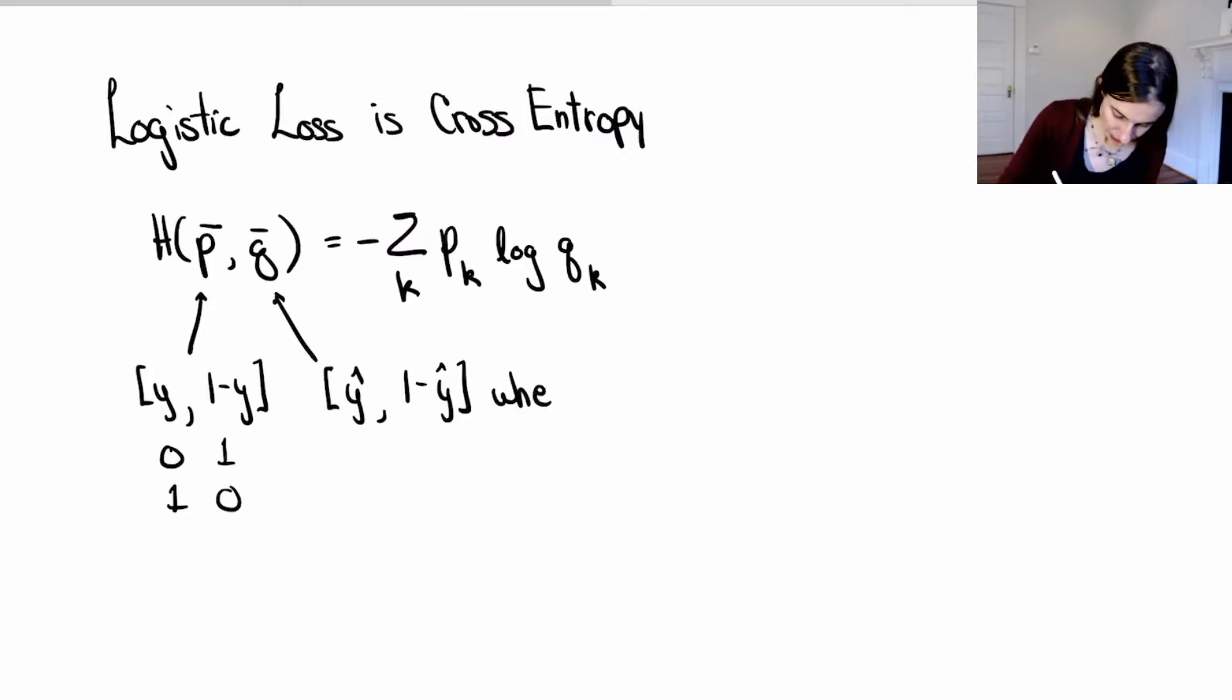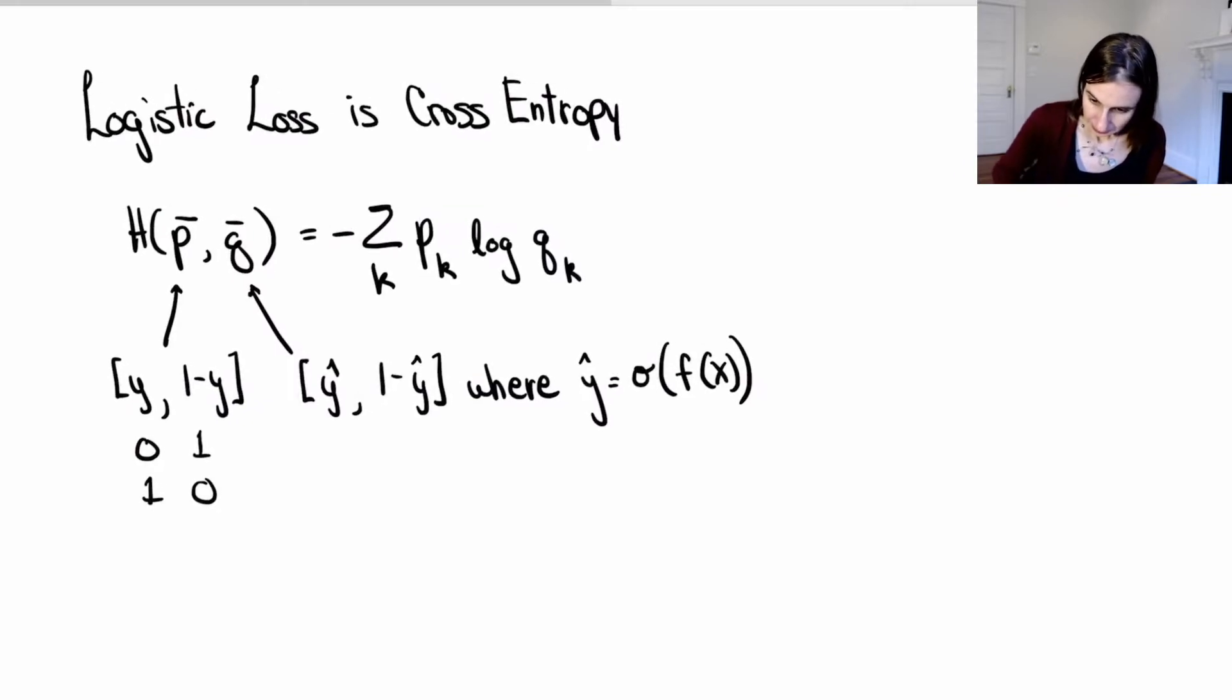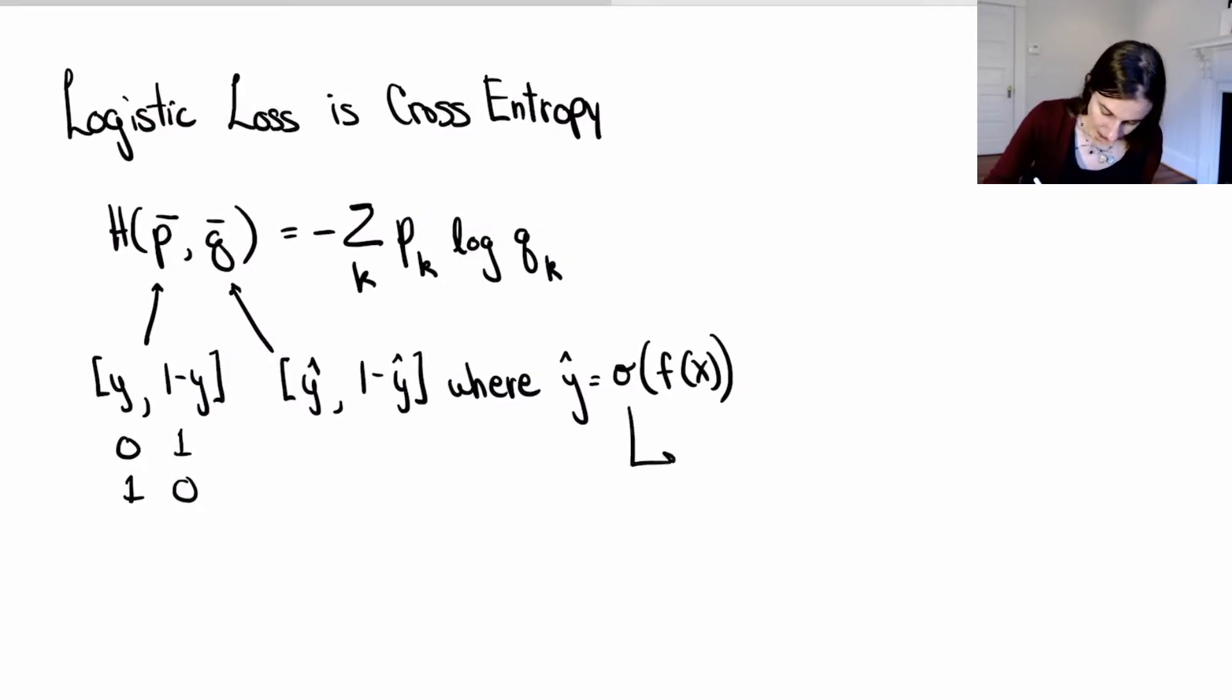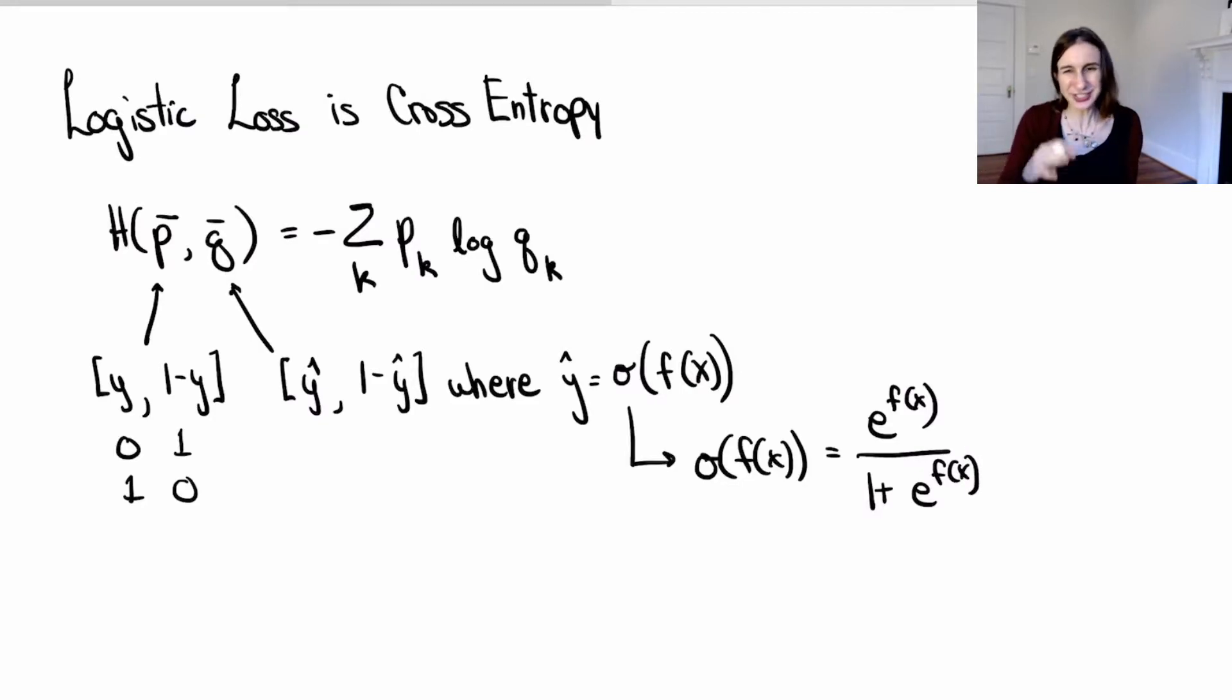So y hat, I just want to remind you what that is. In neural networks, if the activation function is the logistic sigmoid that's used in logistic regression, then you get that y hat equals the sigmoid of f(x), where the sigmoid is e to the f(x) over 1 plus e to the f(x). So it's the same thing as in logistic regression. You can think of y hat also as the estimated probability that y equals 1 given x.